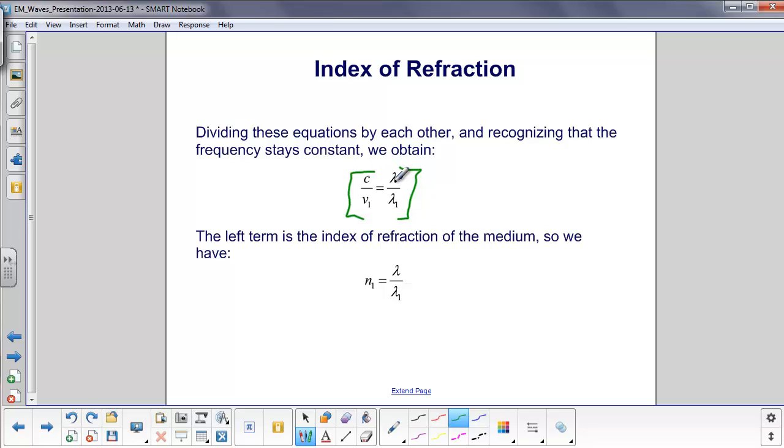And C and lambda is the velocity of light and the wavelength of light in a vacuum. We've already defined the index of refraction as C over V1, so we have this other equation now for the index of refraction of a material. It's equal to the wavelength of light in a vacuum divided by the wavelength of light in that material.